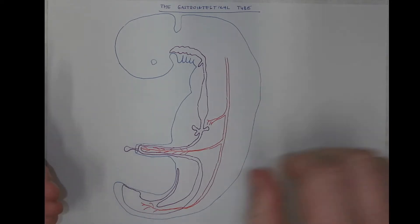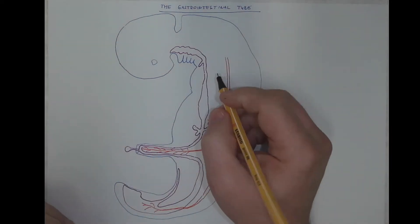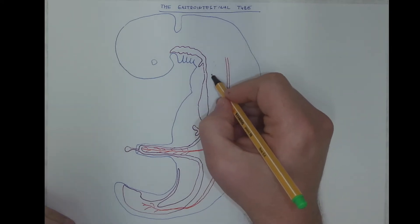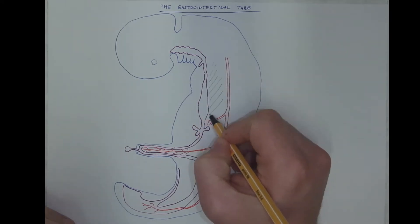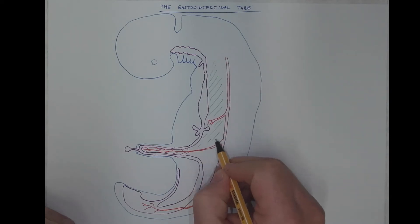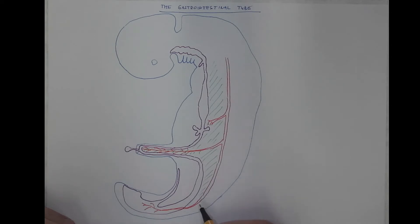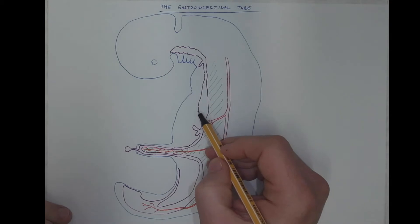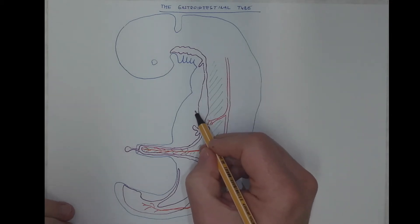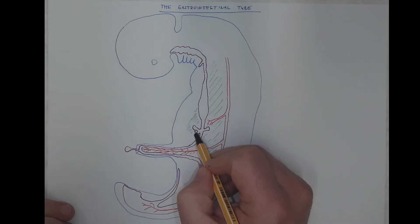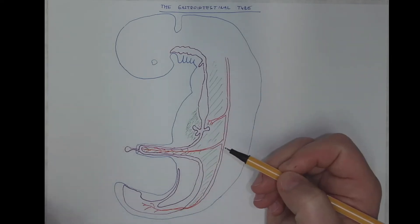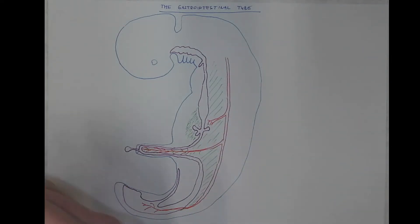The gut tube hangs on mesenteries. It's the dorsal mesentery, which is present in the whole extent here, and it connects the gut tube to the posterior body wall. And it's also a much smaller and only temporary ventral mesentery in the region of the stomach and the hepatic and pancreatic buds. So let's label the scheme.